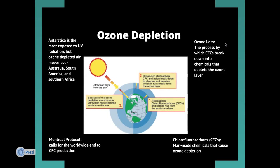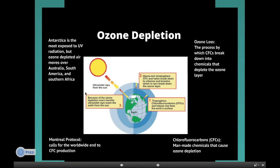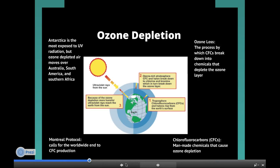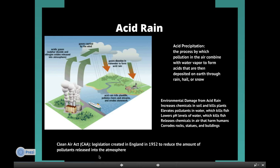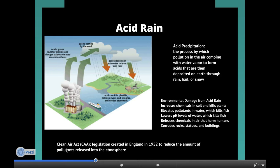This slide talks about ozone depletion — the picture is really informative, so read up on it. Ozone loss is one of the key terms, so definitely remember that. Acid precipitation is the process of pollutants in the air combining with water vapor to change the pH of the water in the air. As it rains and goes back into the Earth, it can definitely damage the environment. Because of this, the Clean Air Act was passed to reduce the amount of air pollution released into the atmosphere.